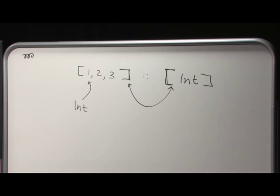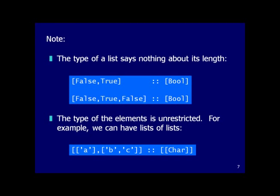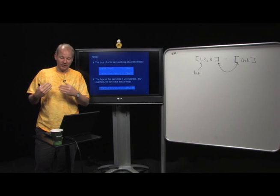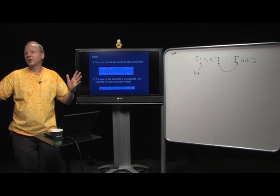The type of a list `[T]` says nothing about the length of the list — same as in C#, VB, or Java. When you have a value of type `[T]`, it only tells you there's a sequence of values of type T; it might be empty or have a thousand elements.